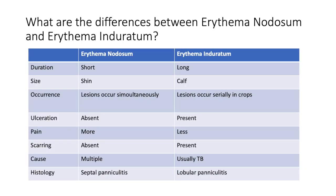There is another skin lesion called erythema induratum, commonly mistaken for erythema nodosum. Key differences: duration is short for nodosum but long for induratum; site is the shin for nodosum but the calf for induratum; nodosum lesions occur simultaneously whereas induratum occurs serially in crops; nodosum never ulcerates but induratum does; pain is much more severe with nodosum; scarring occurs with induratum but not nodosum; causes of nodosum are multiple but induratum is mainly TB.